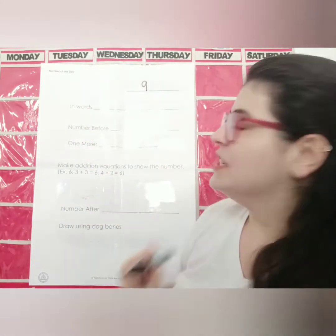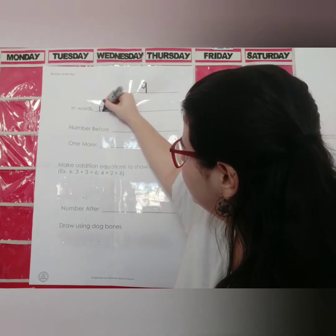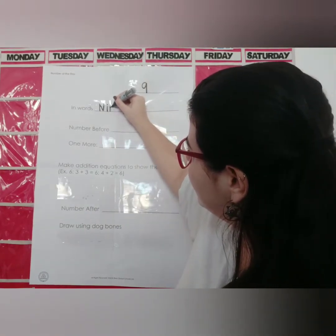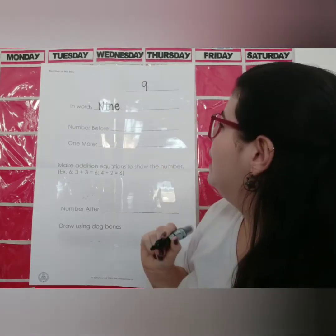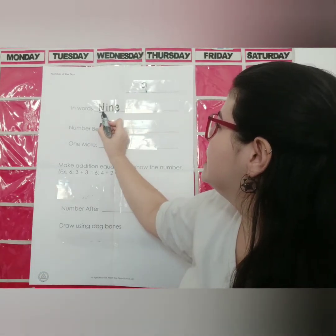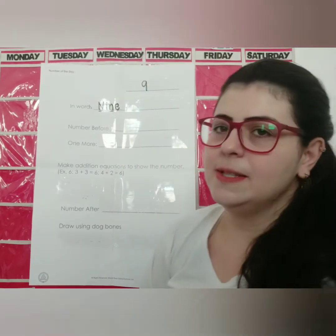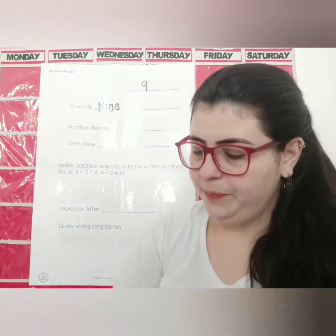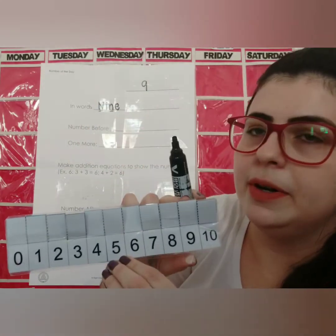Aim words: 9. N, I, N, E for Elephant. 9 — uppercase because it's the beginning, lowercase. This is our number, number 9.